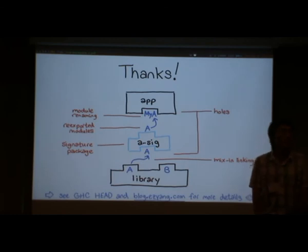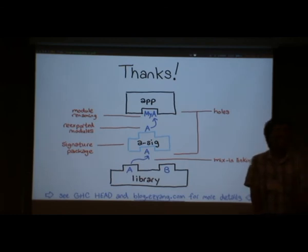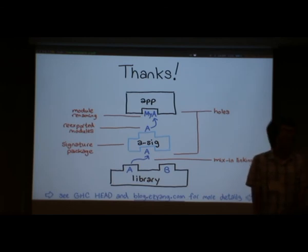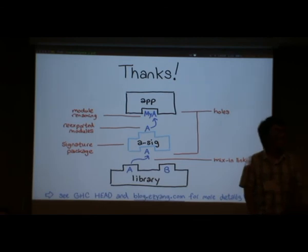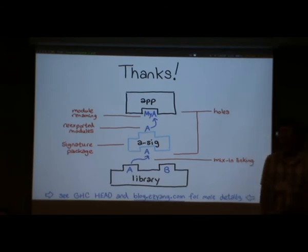How well have ad hoc interfaces worked for Go? Does anyone know? Not really. And the point is: Cabal is not going to go and find any old package that implements a signature — it comes with your explicit dependency specification.